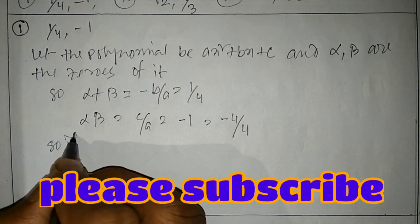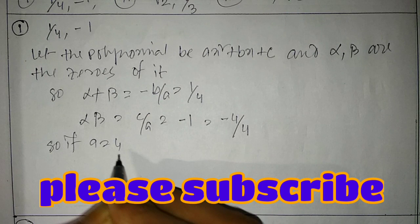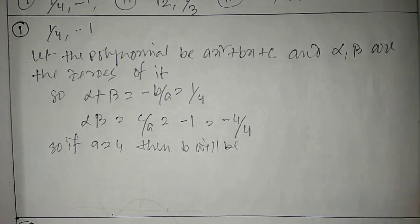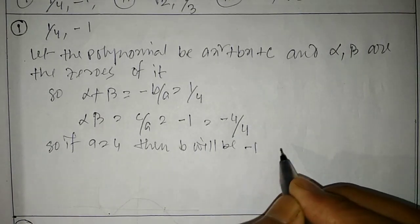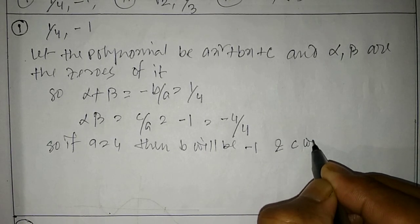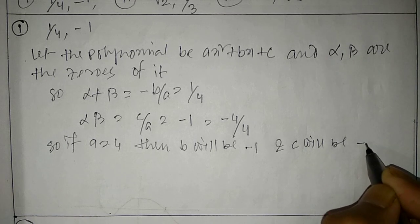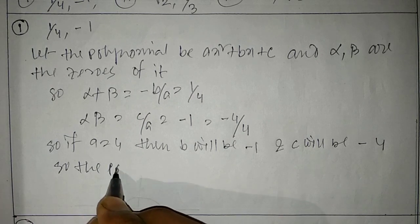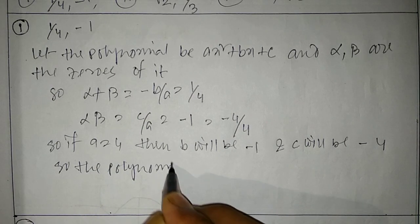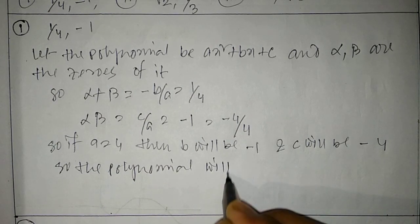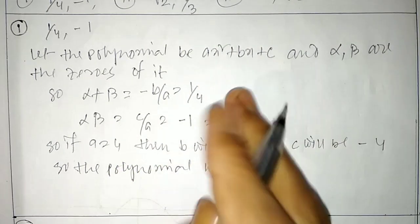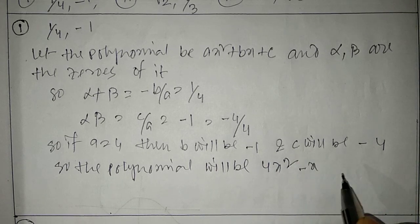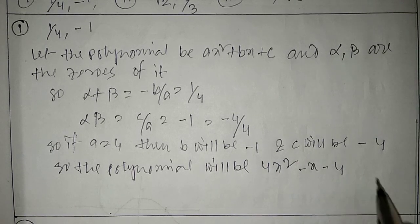So if a = 4, then b = -1 and c = -4. Therefore the polynomial will be 4x² - x - 4.